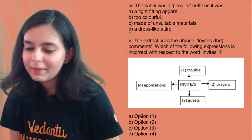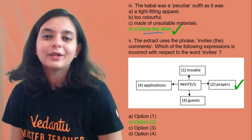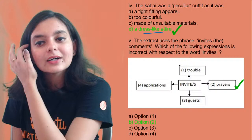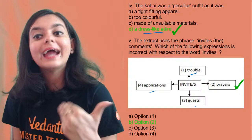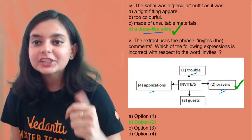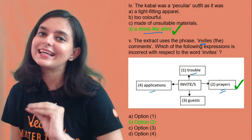The peculiar outfit — you all were correct — was a dress-like material. For question five: you can invite trouble — that is fine. You can invite an application — that is also fine. You can invite guests — perfectly correct. But 'inviting prayer' is not — that is the odd one out. The answer is the option with 'prayer' as it does not collocate naturally with 'invite.'